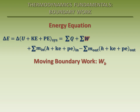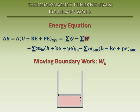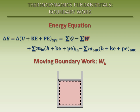Consider a cylindrical vessel containing a fixed amount of some substance. A piston is placed in the cylinder on top of the substance. Let's take the substance as our system. Moving boundary work occurs when the boundary of the system moves as the substance is expanded or compressed.